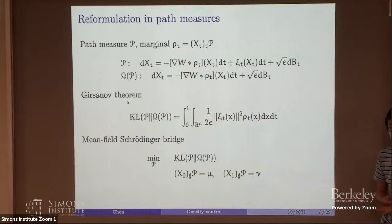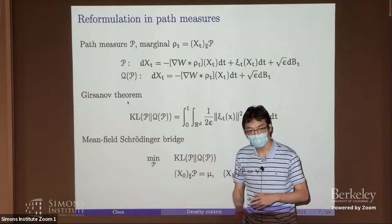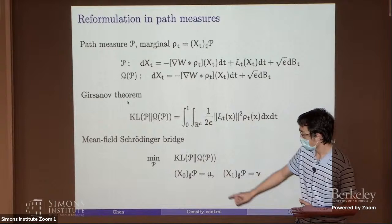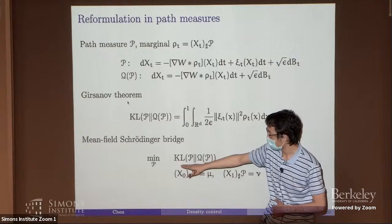If we invoke the Girsanov change of measure, which is standard in this domain, this quadratic energy can be written as the KL divergence — relative entropy — between the controlled process and the uncontrolled process. Combining all of this together, what we need to find is a measure over path space — really high-dimensional, infinite-dimensional — such that the marginal at time zero is the initial distribution and the marginal at terminal time is the target distribution, while minimizing this control energy.